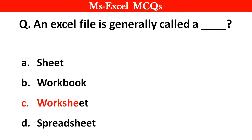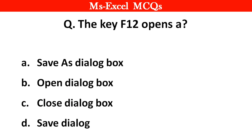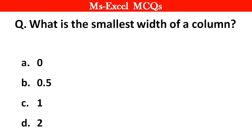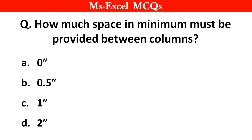Next question. An Excel file is generally called a dash. The right answer is option C: Workbook. Next question. The key F12 opens a dash. The right answer is option A: Save As dialog box. Next question. Pressing F8 key 3 times selects dash. The right answer is option B: A sentence. Next question. What is the smallest width of a column? The right answer is option B: 0.5. Next question. How much minimum space must be provided between columns? The right answer is option A: 0 inch. Thank you.